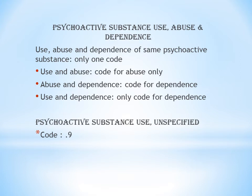The next guideline is psychoactive substance use unspecified. If it is not specified whether the condition is use, abuse, or dependence, then after the category code from F10 to F19, you can take .9 — for example, F10.9 for unspecified alcohol use.